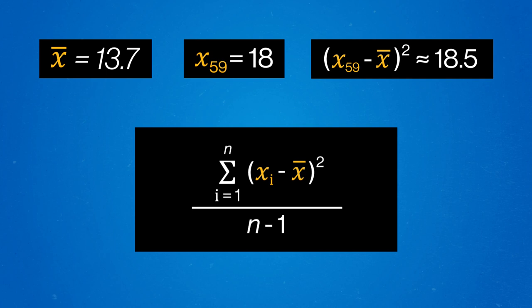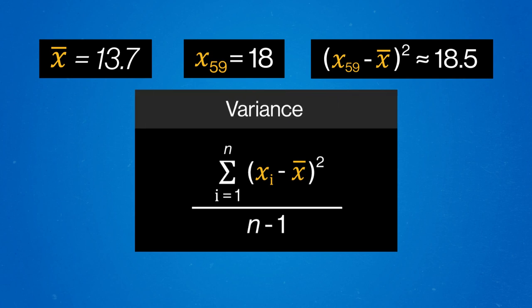And now we're nearly at our standard deviation! What we've calculated so far gives us another really helpful measure of how spread out our data is from the mean, which we call the variance. Variance gives us an idea of the spread of the data, but it's not all that intuitive, since it tells us about squares of distances. It's like if you wanted to know how far away the coffee shop is and I told you 12 square miles — kind of helpful, but not particularly intuitive or easy to work with.